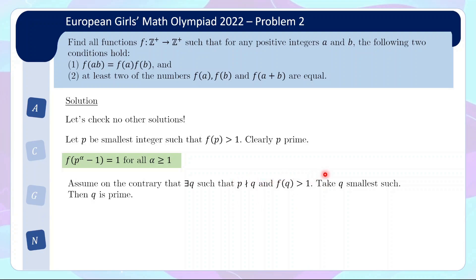Let us take the smallest such instance, and again, this value q must be a prime because otherwise you can break it up into two smaller factors that are both not multiples of p, and again, f of that are equal to 1, so we get a contradiction. So now we have a prime q, but then this q will divide p to the alpha minus 1 for some alpha.